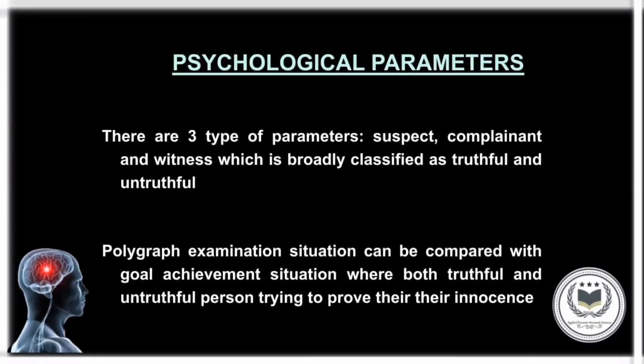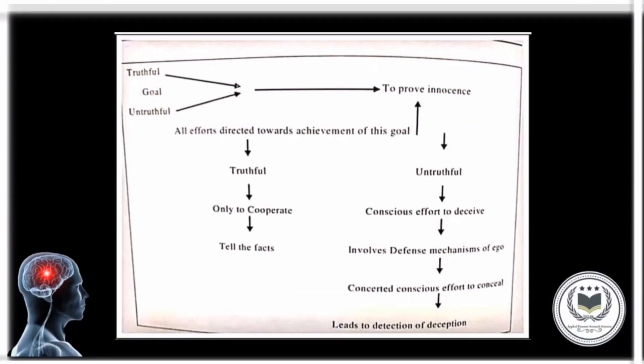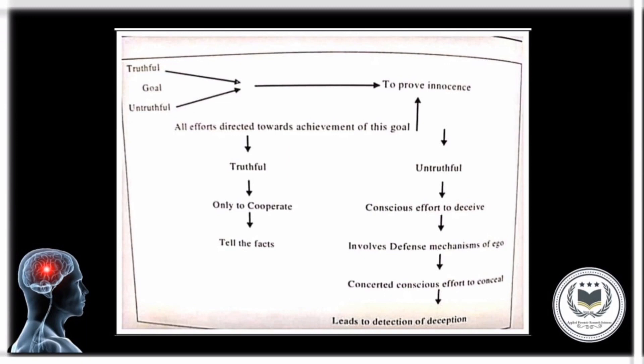Physiological Parameters: There are three types of parameters — suspect, complainant, and witness — broadly classified as truthful and untruthful. The polygraph examination situation can be compared to a goal achievement situation where both truthful and untruthful persons try to prove their innocence. A block diagram is prepared to show the difference between the goal achievement behavior of truthful and untruthful persons.